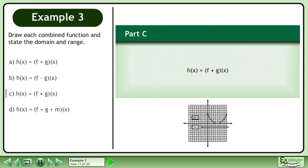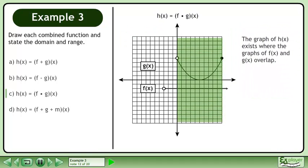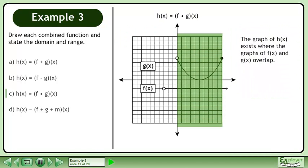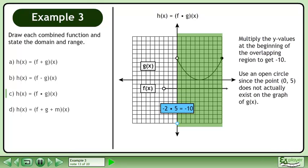In part c, we'll graph h equals f times g. The graph of h exists where f and g overlap. Multiply the y values at the beginning of the overlapping region to get negative ten.